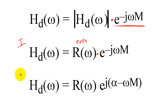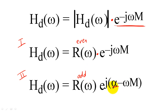Alternatively, we say that a filter has generalized linear phase type 2 if the filter can be decomposed into two similar parts: a real, oddly symmetric function and a linear phase component that is not zero at the zero frequency.